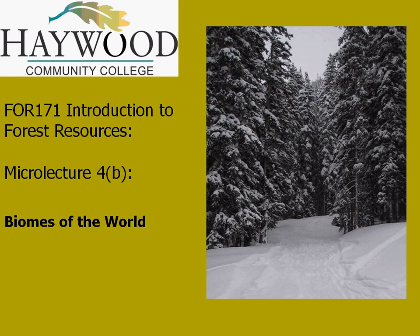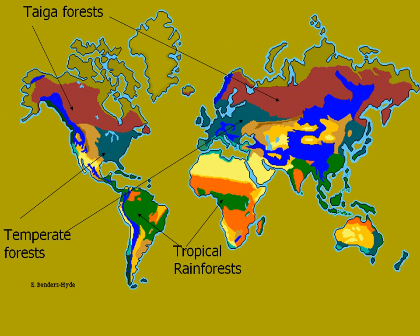For this micro lecture, we're going to focus on the major biomes of the world and do a play-by-play of each of the major forested regions. For simplicity's sake, we'll break down the primary forest biomes into three: taiga forests or boreal forests, which occur in the far northern hemisphere; temperate forests, which we see in the southeastern United States and throughout Western Europe; and tropical rainforests, which exist close to the equator.